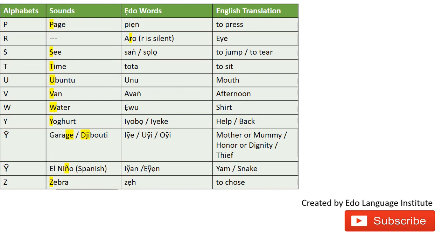We have a word for shirt. Now the first Y sound — like in 'yogurt' — it's a rather light Y. We have 'IYOBO' and 'IEKI.' 'IYOBO' literally means help or assistance, and 'IEKI' means back — either the body part or figuratively, as in 'at the back of the room' or 'behind something.' 'IYOBO' is also a very popular and beautiful EDO name, and it is unisex.